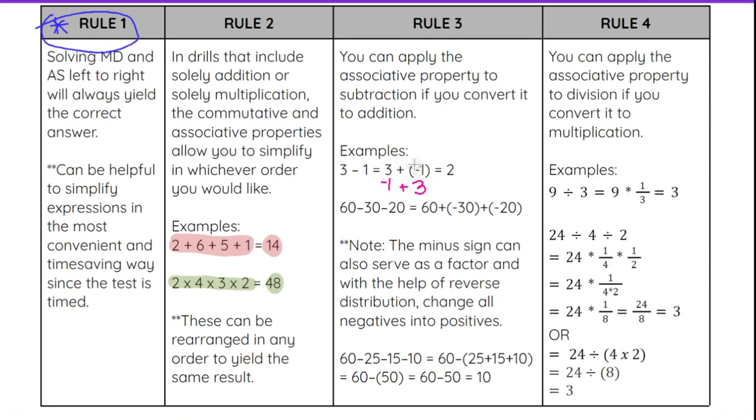So if you can convert it into addition, then you can use that commutative or associative property to change around the order or the grouping and still get the same answer. That can sometimes come in handy. Not always, but sometimes it does.